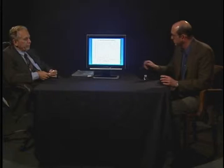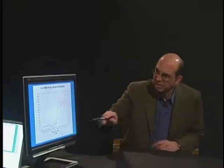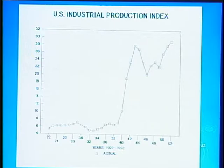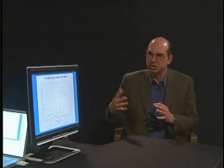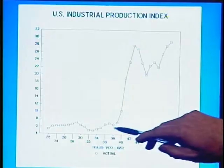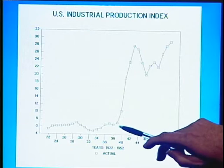In 1932, industrial production starts going up — the same pattern as with unemployment. Everything is getting better. Then in 1937, FDR loses his nerve again, and industrial production goes down as unemployment goes up and GDP drops. Roosevelt gets a lesson in reality and goes back to what he had been doing with stimulus. Then things really take off in 1939 when Hitler begins invading Czechoslovakia and Poland.